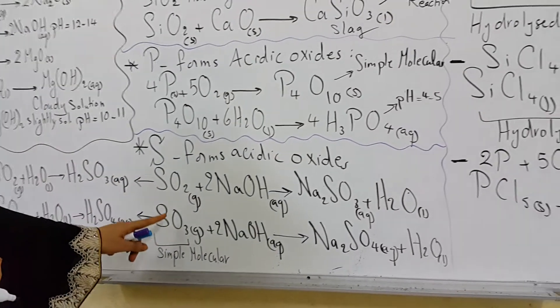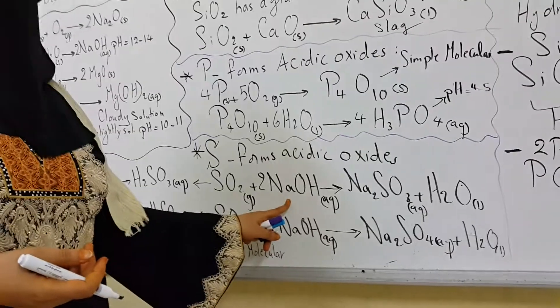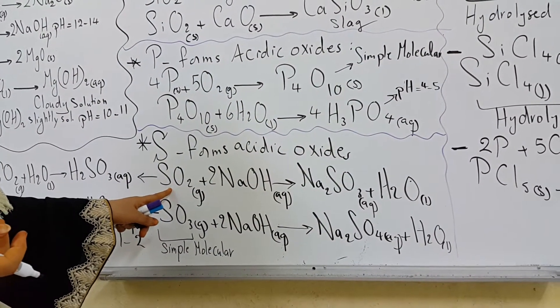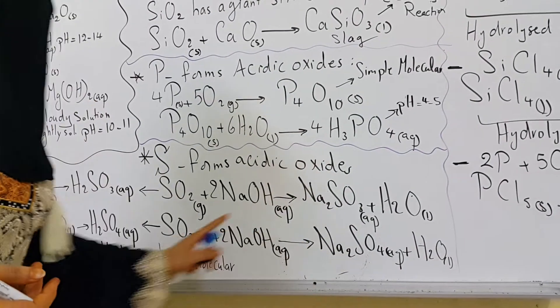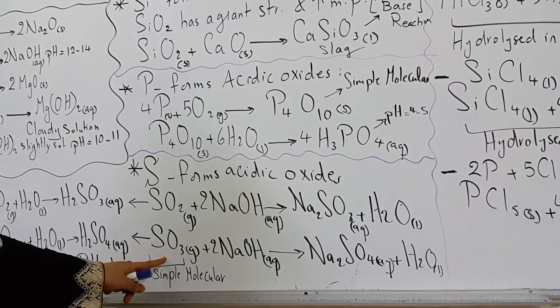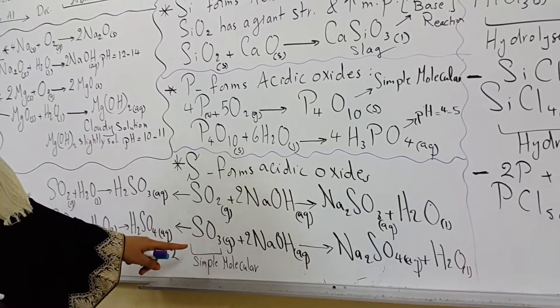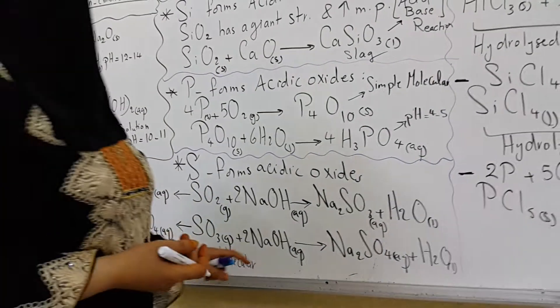And these oxides have the ability to react with an alkali, such as sodium hydroxide, to give sodium sulfite if the reactant is sulfur dioxide, sodium sulfate if the reactant is sulfur trioxide. Remember, sulfur dioxide and trioxide both have simple molecular structures.